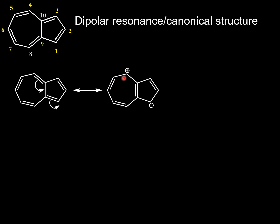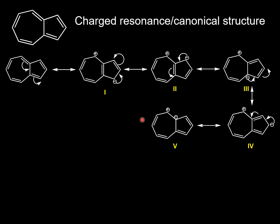Now, look at the rings and count the number of pi electrons in each ring. Both the 7-membered ring and 5-membered ring will have 6 pi electrons and thus become aromatic in nature, following Hückel's rule. Further, you can delocalize the negative charge at different carbons of the 5-membered ring and will have 1 to 5 resonance structures.